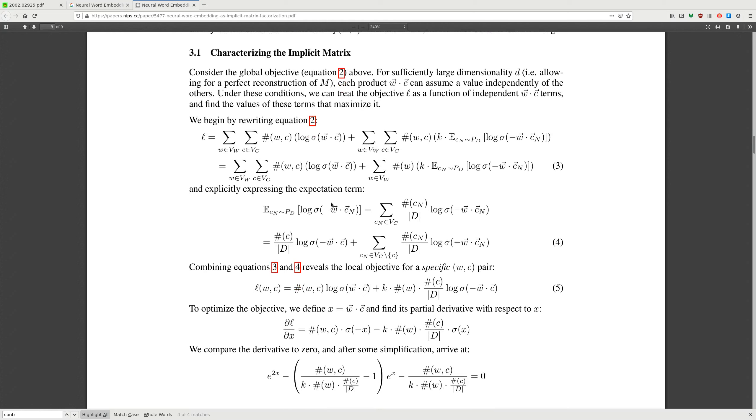Characterizing the implicit matrix. Consider the global objective in equation. If we force sufficiently large dimension D, allowing for perfect reconstruction of M, each product can assume a value independently of the others. Under these conditions, we can treat the objective as a function of independent word-vector and context-vector terms and find values of these terms that maximize it.